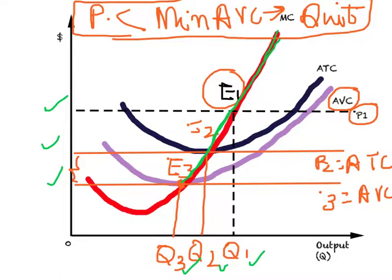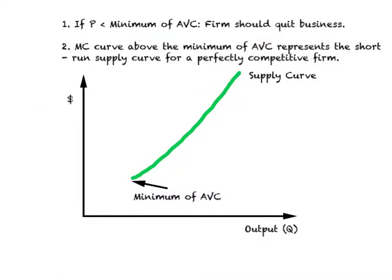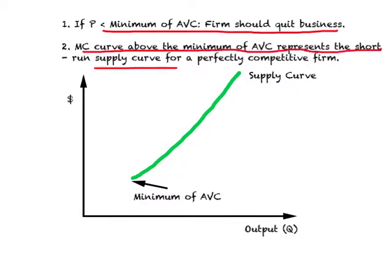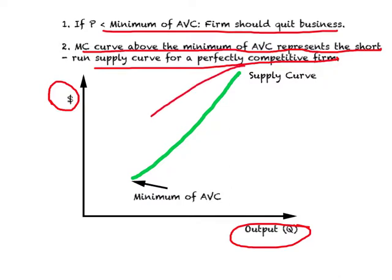To summarize: if price falls below the minimum of AVC, the firm should quit business; otherwise it should stay in business. The MC curve above the minimum of AVC represents the short-run supply curve for a perfectly competitive firm. With output on the horizontal axis and price on the vertical axis, this supply curve starts at the minimum of AVC and is simply the rising stretch of the MC curve. This completes our discussion of perfect competition in the short run.